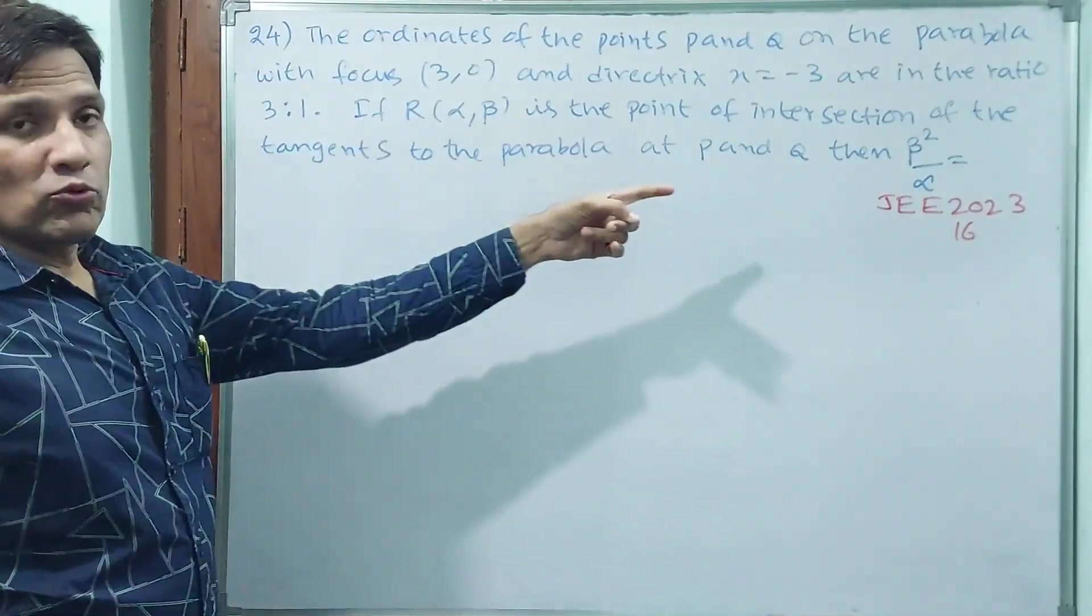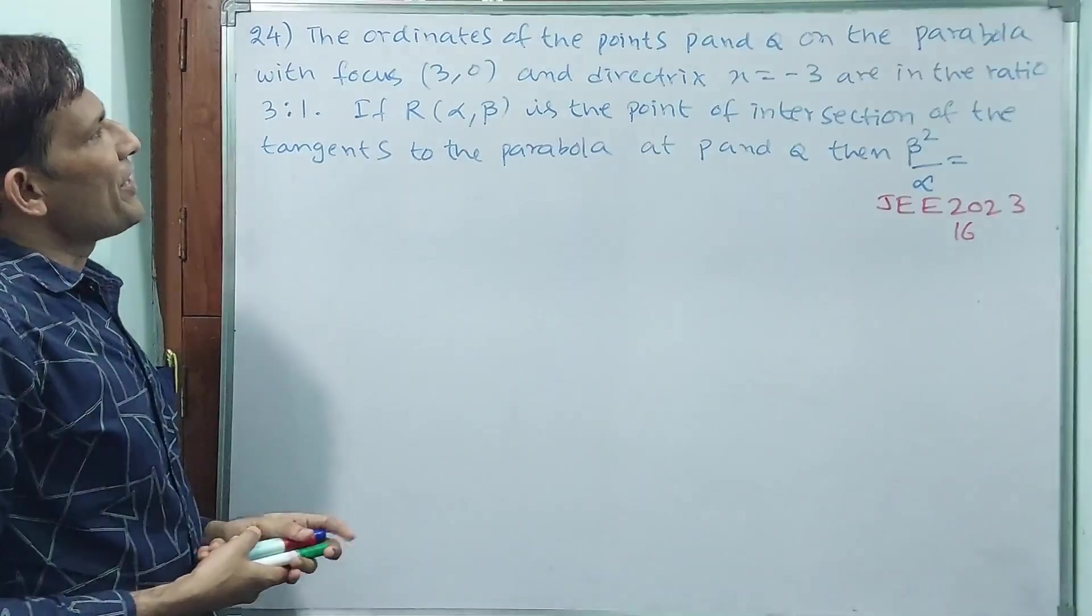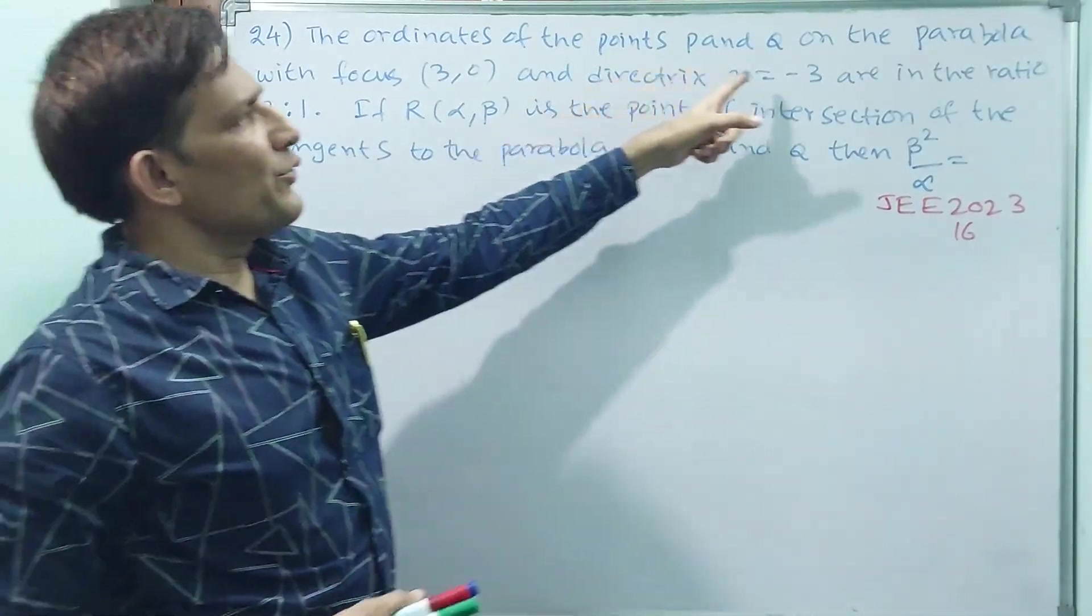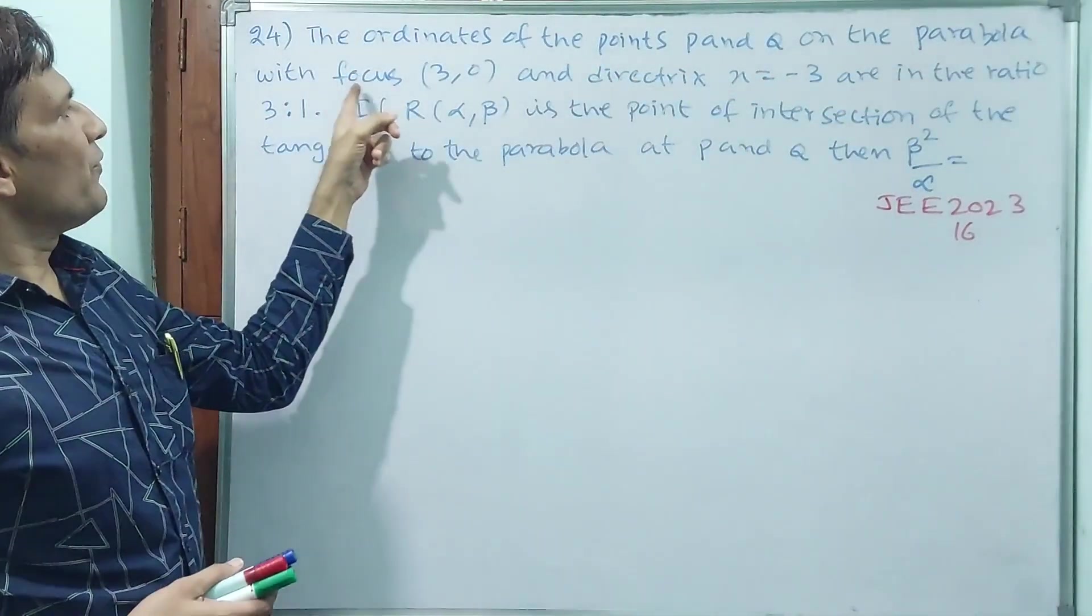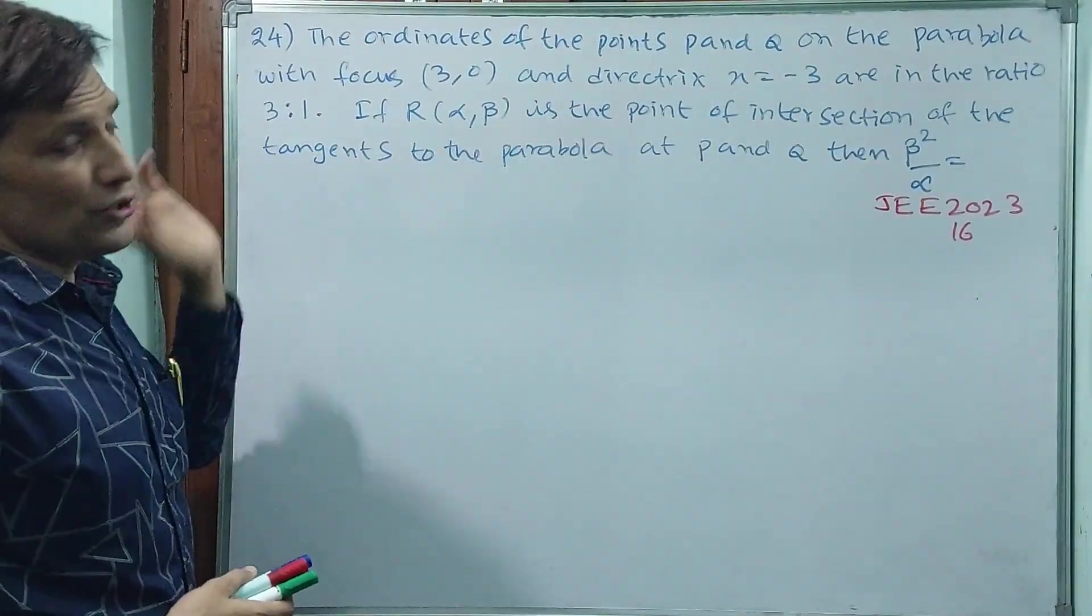This is from JEE 2023. The ordinates of the points P and Q on the parabola with focus (3,0) and directrix x = -3 are in the ratio 3:1.